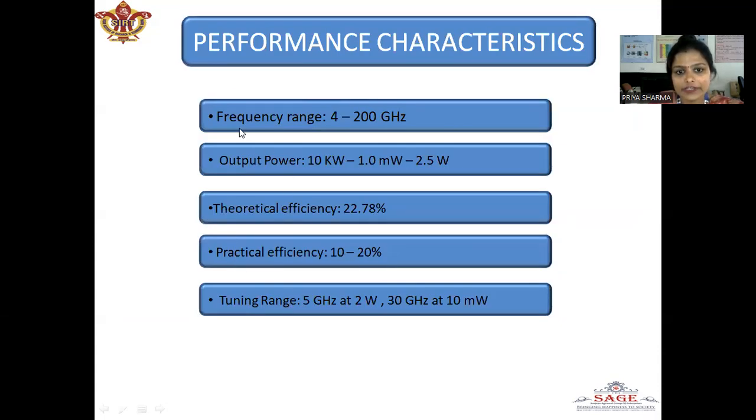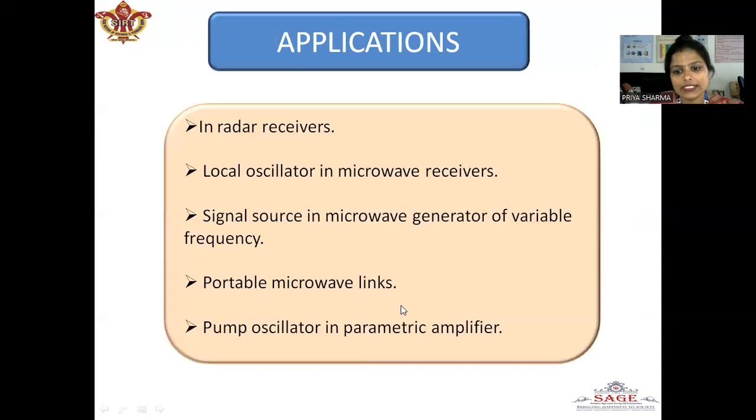Coming to the performance characteristics, the frequency range used is 4 to 200 gigahertz. Output power is 10 kilowatt to 1 milliwatt to 2.5 watts. Theoretical efficiency is 22.78 percent. Practical efficiency is 10 to 20 percent and the tuning range is 5 gigahertz if used at 2 watts and 30 gigahertz if used at 10 milliwatt.